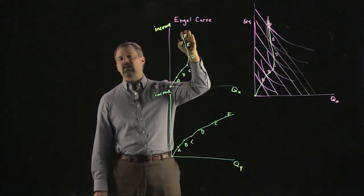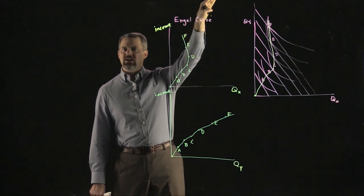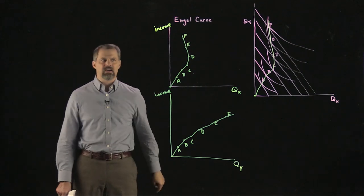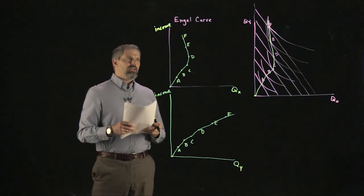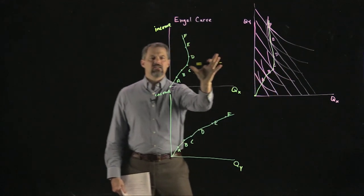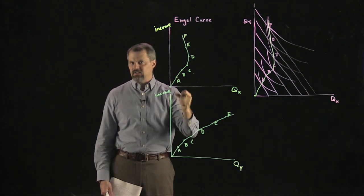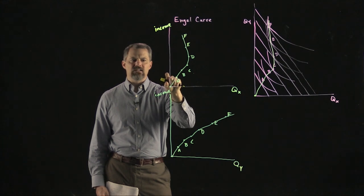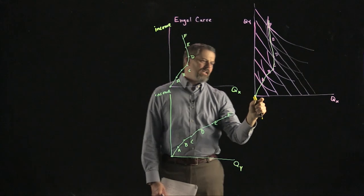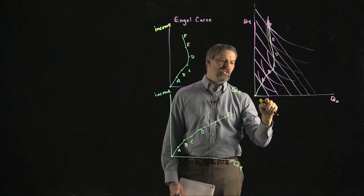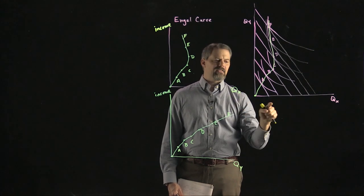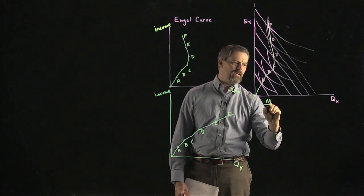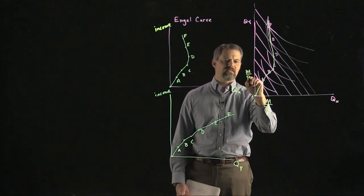You could theoretically have good X turn normal again at very high incomes and then good Y become inferior, but you cannot have both goods inferior at the same time. The Engel curve and income expansion path are two ways of showing the same idea. The Engel curve makes it easier to read income directly off the vertical axis, while in the income expansion path picture you'd need to calculate income from the intercepts using the formula: income = intercept × price.